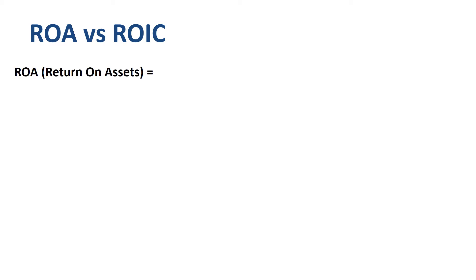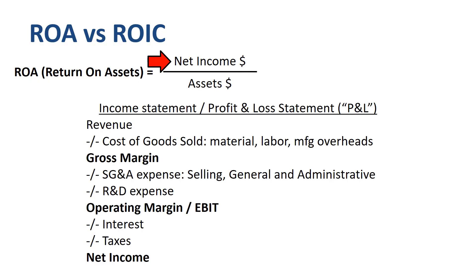ROIC is very closely related to the easier-to-understand metric ROA, so it makes sense to quickly walk through the definition of ROA first. Return on assets is simply net income divided by total assets. To find the net income of a company, you take its income statement or profit and loss statement, and go to the very bottom — the line called net income, also known as the bottom line.